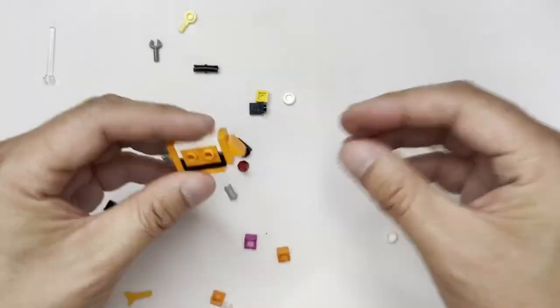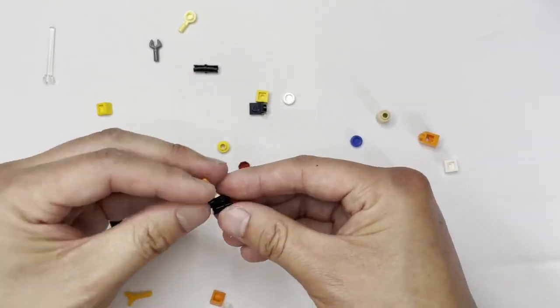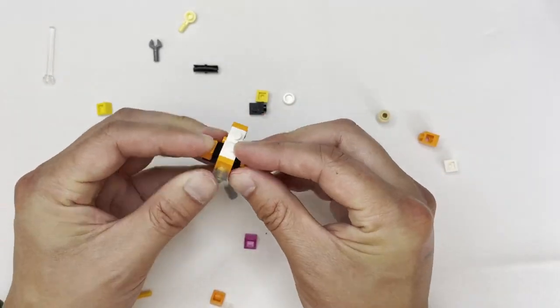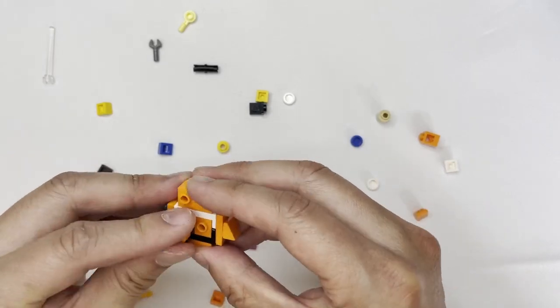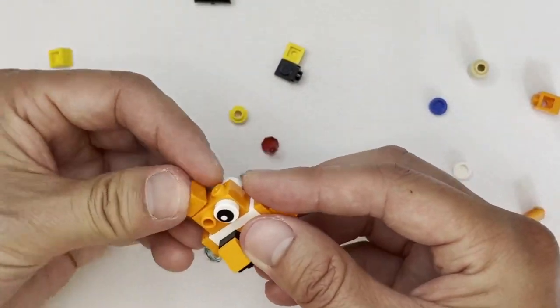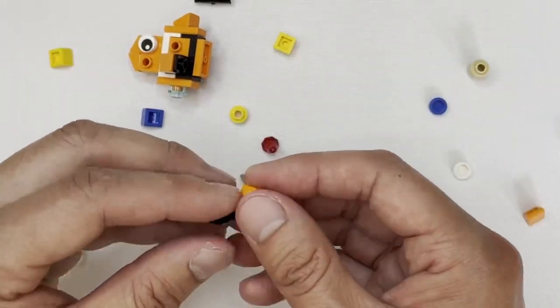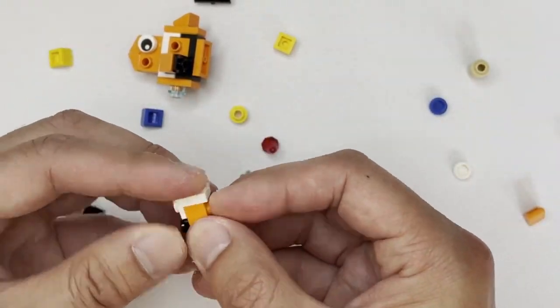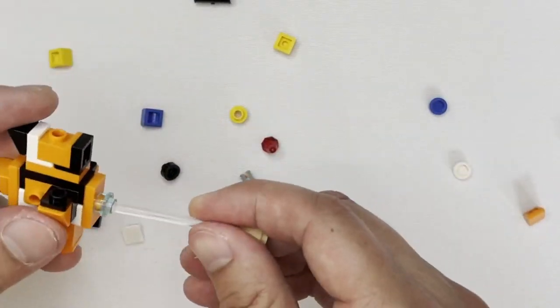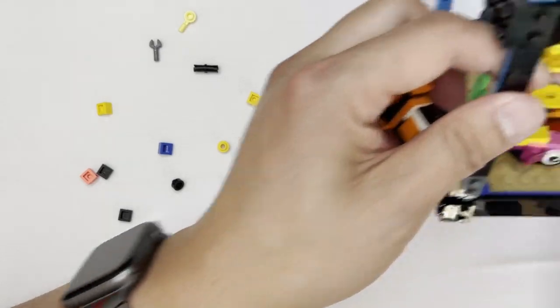So the fish that you're seeing being built right now is a clownfish, as noted by the orange coloration as well as the white and black striping. And the fish that you saw me build before that was yellow and pink is called an anthias, I believe how you pronounce it.